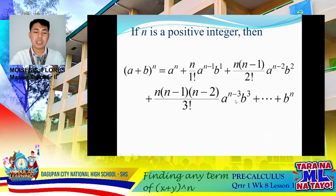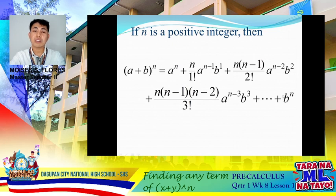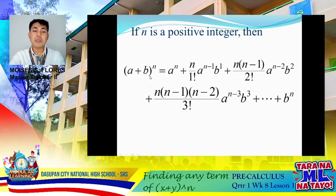So the first and the last have the same highest exponent, which is 10 — this is a raised to 10 and this is b raised to 10. The powers of a decrease by 1 for each term: so from 10 it becomes 9, 8, 7, 6, 5, 4, 3, 2, 1, until it reaches 0. The power of b increases by 1: 1, 2, 3, and so on until it reaches 10. Also, the sum of the exponents of a and b is always equal to n.